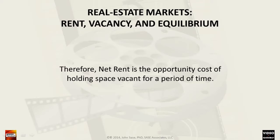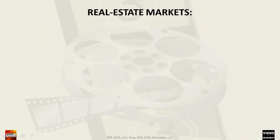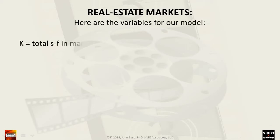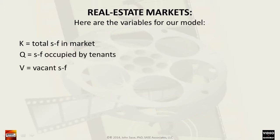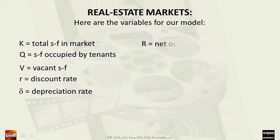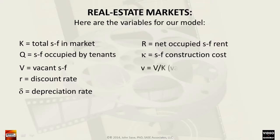Before constructing a real estate market model, let's define and give symbols for the variables that we will use. These are: large K, the total square footage that exists in a specific market; large Q, the square footage currently occupied by tenants; large V, the square footage in the market that is currently vacant; small r, the discount rate for determining present value; delta, the rate of depreciation for any structures — note that the land itself is not depreciable; large R, the rent per square foot for occupied space; and kappa, the construction cost of an additional square foot of improvements.